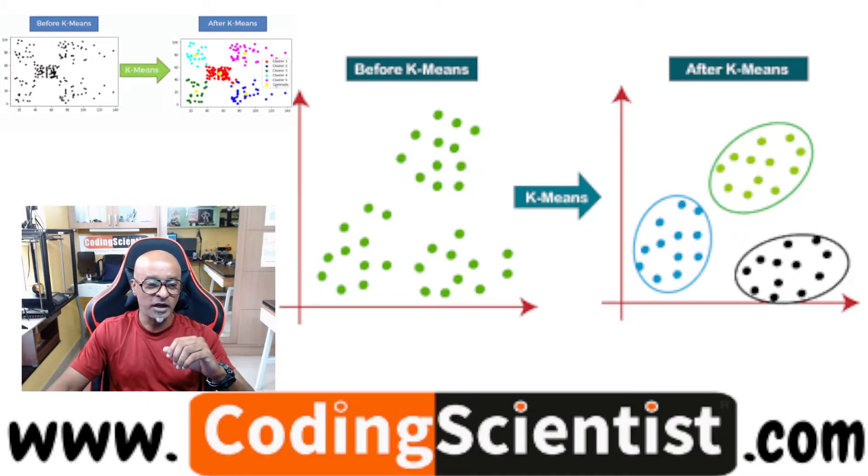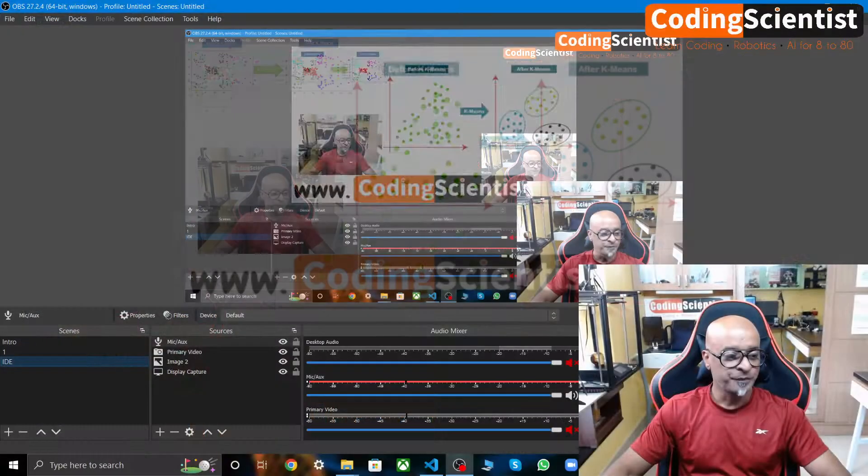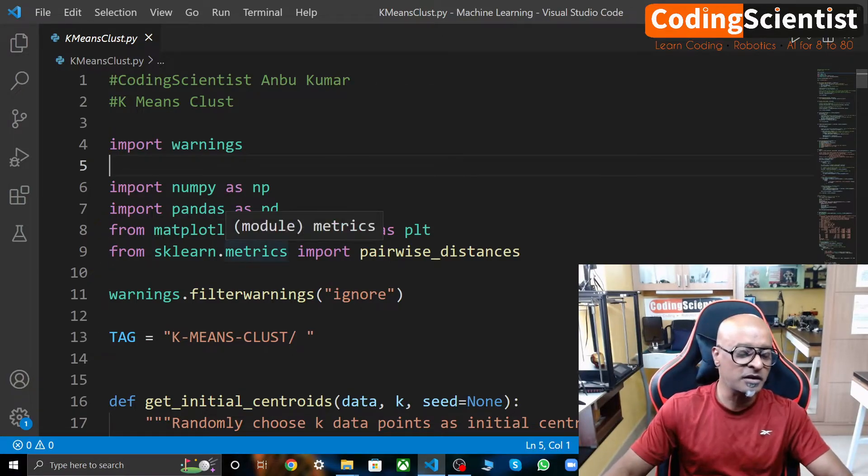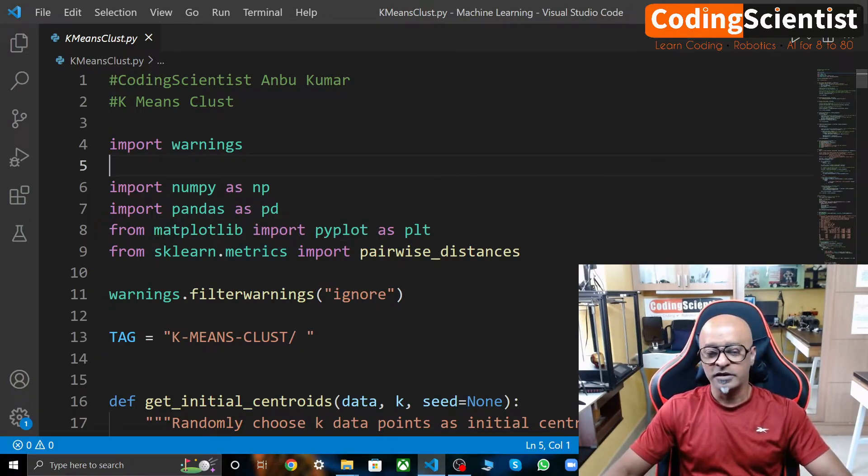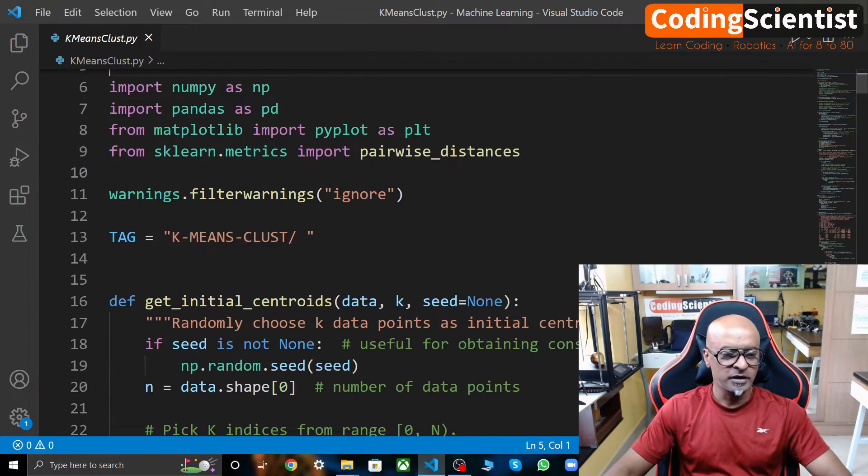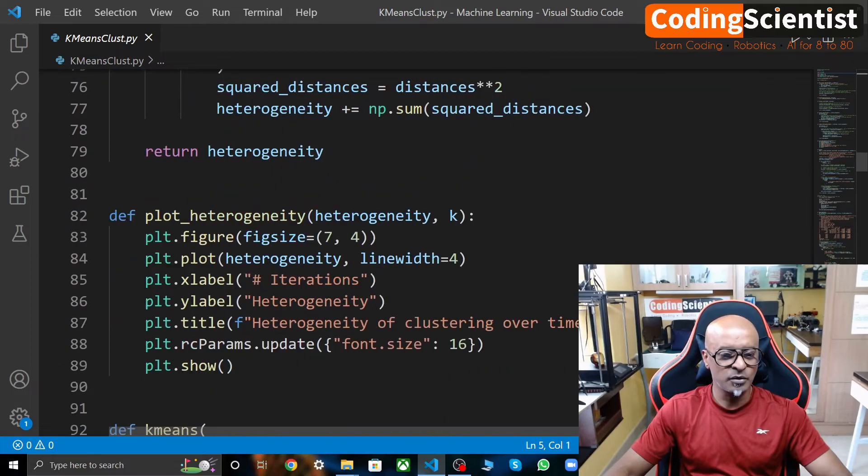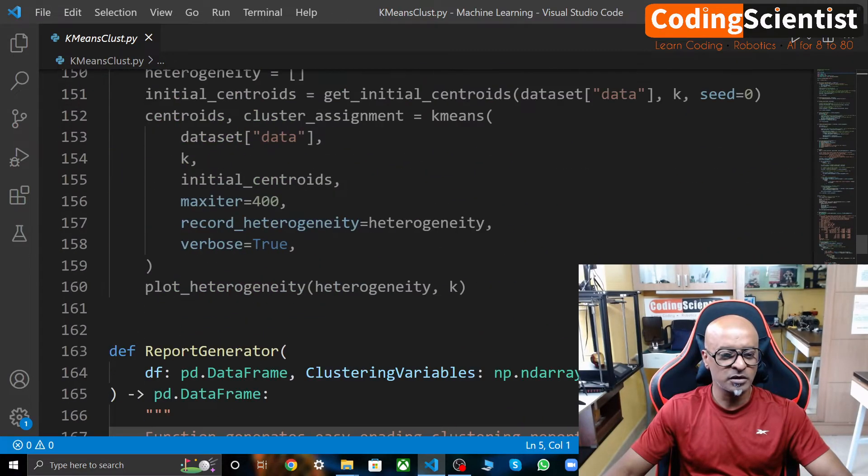Let's move on to the IDE and let me open up the Python code to implement our K-means algorithm. So basically, we are importing a package called warnings and then numpy, pandas, and matplotlib, and our favorite package scikit-learn.